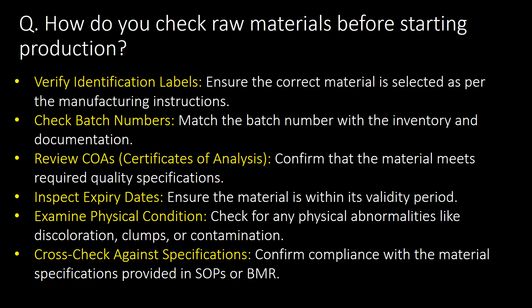How do you check raw materials before starting production? Here are 6 ways for checking raw materials before starting production: 1. Verify identification labels. 2. Check batch numbers. 3. Review COA, i.e., Certificate of Analysis. 4. Inspect expiry dates. 5. Examine the physical condition of raw materials. 6. Cross-check against specifications.